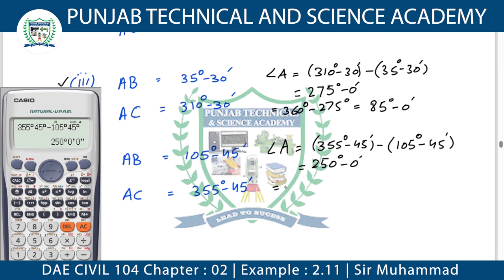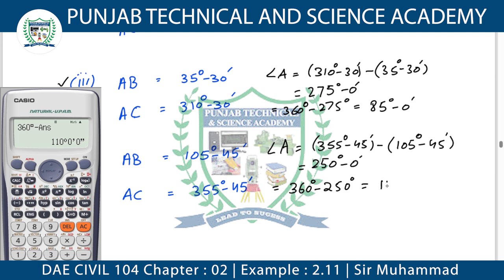We need the interior angle but this is the exterior angle. So here, 250 — subtract from 360 degrees. Look at the other side from the whole circle. This is outside, we need to look inside. So 360 degrees minus 250 degrees — let us calculate. The bearing gives us 110 degrees, 0 minutes — this is our interior angle value.